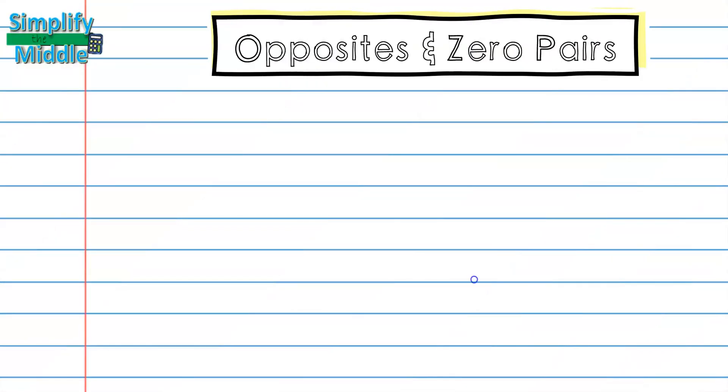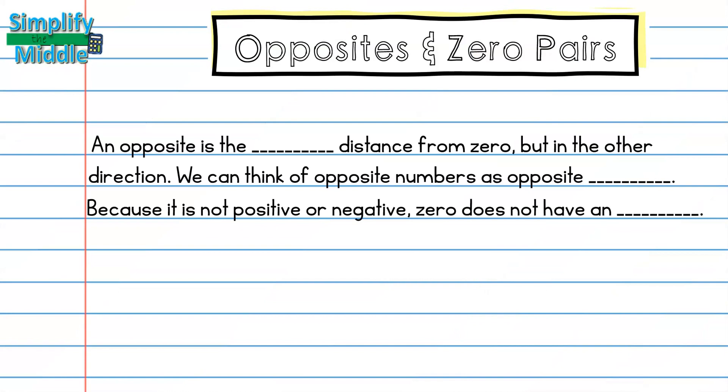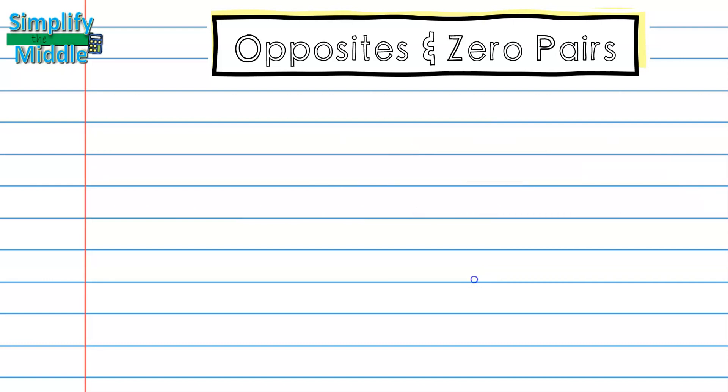Let's wrap up. An opposite is the same distance from zero, but in the other direction. We can think of opposite numbers as opposite signs. Because it is not positive or negative, zero does not actually have an opposite. We learn that a zero pair is the sum of a number and its opposite.